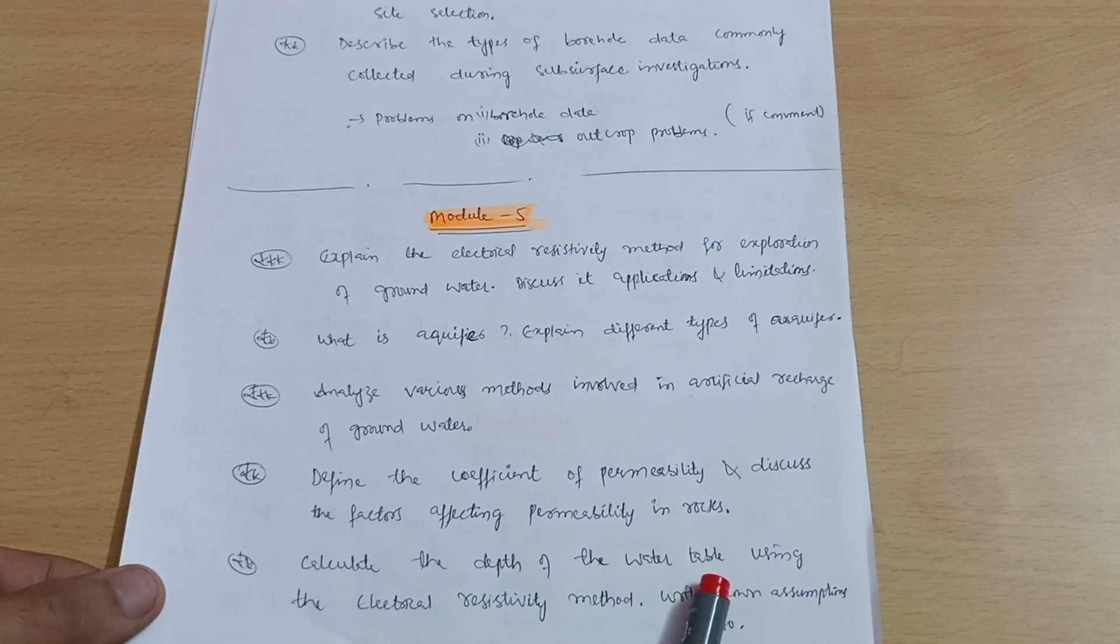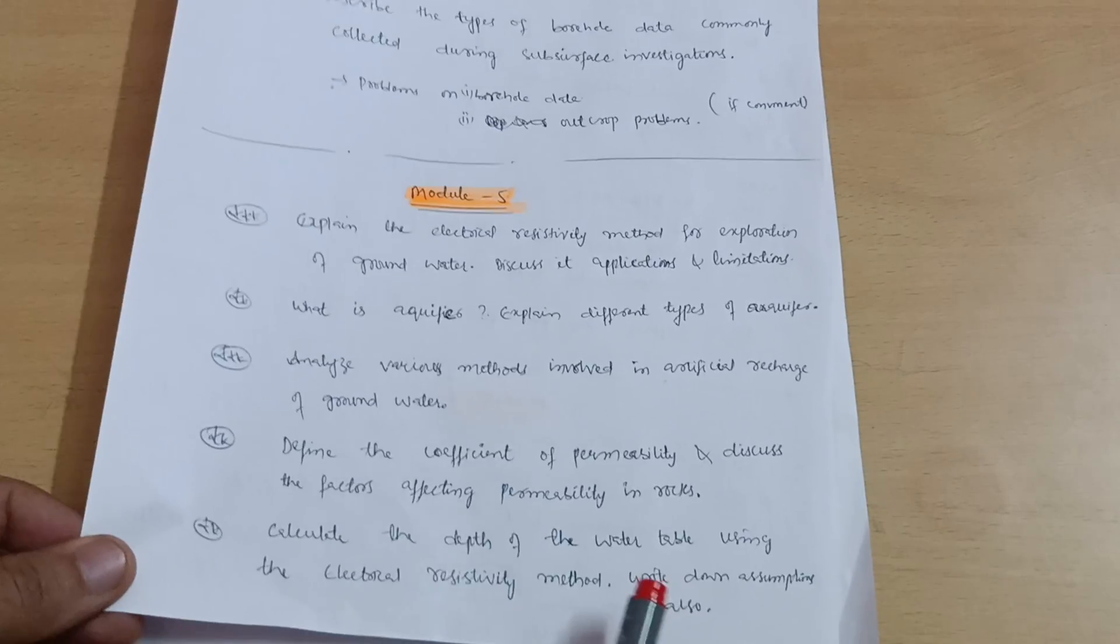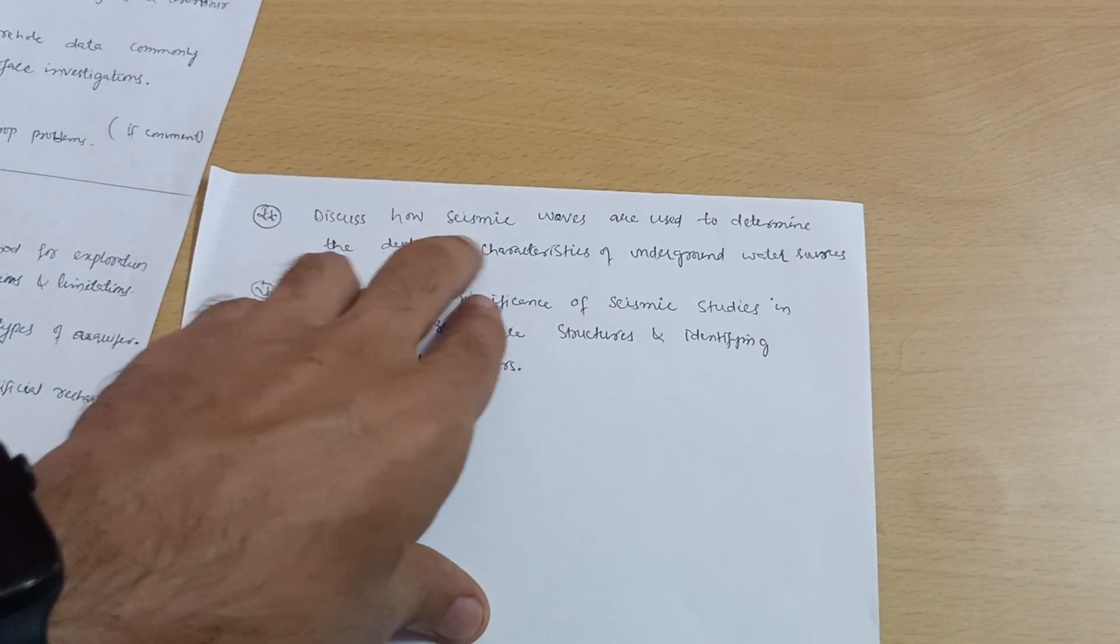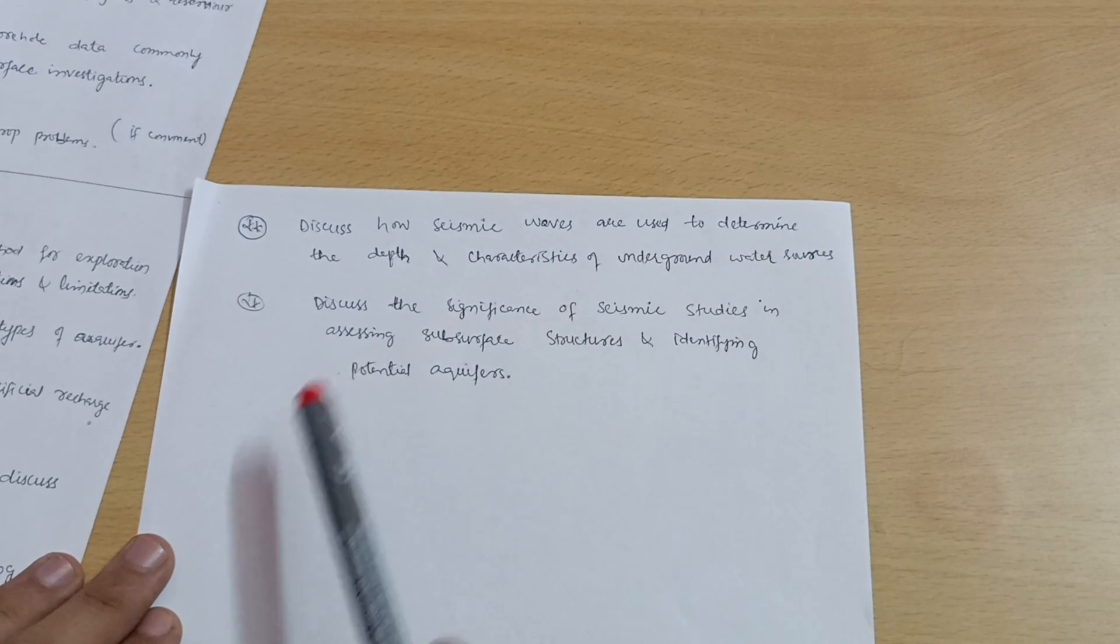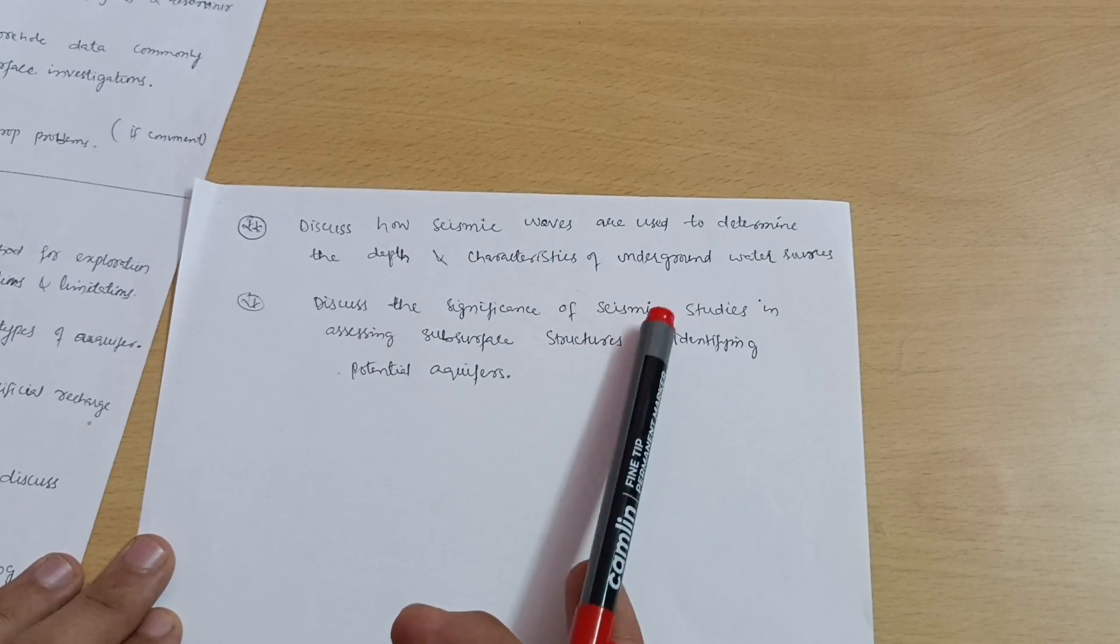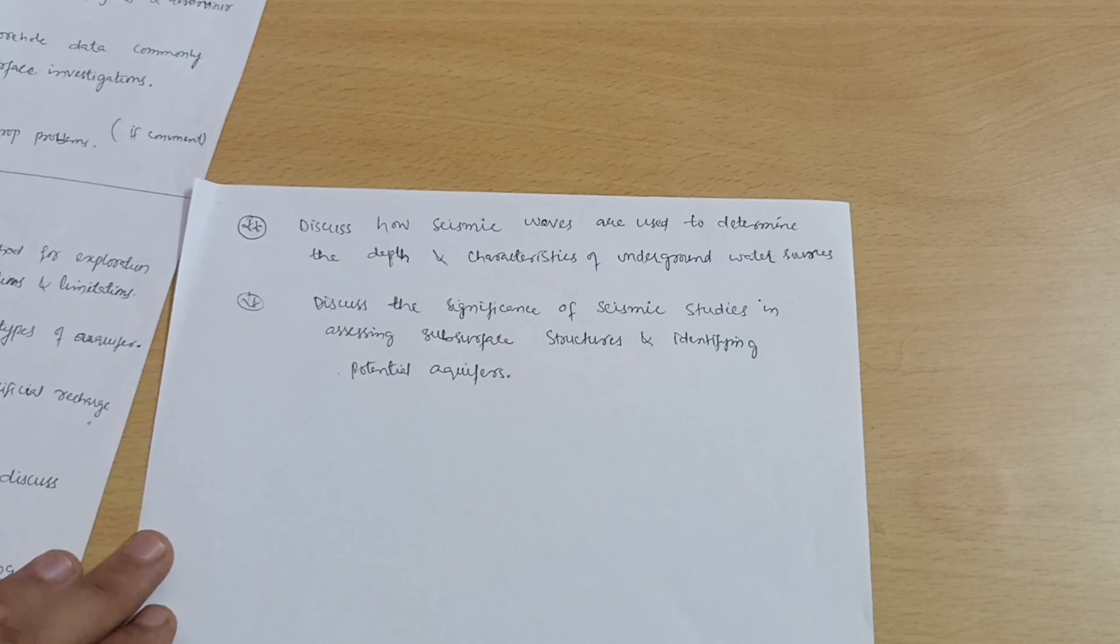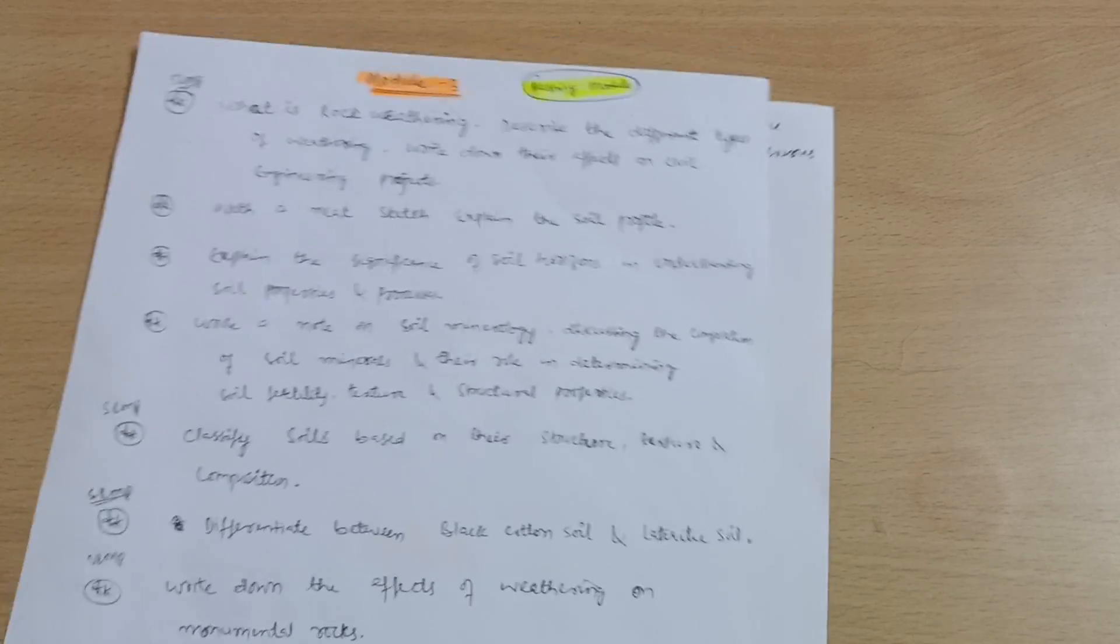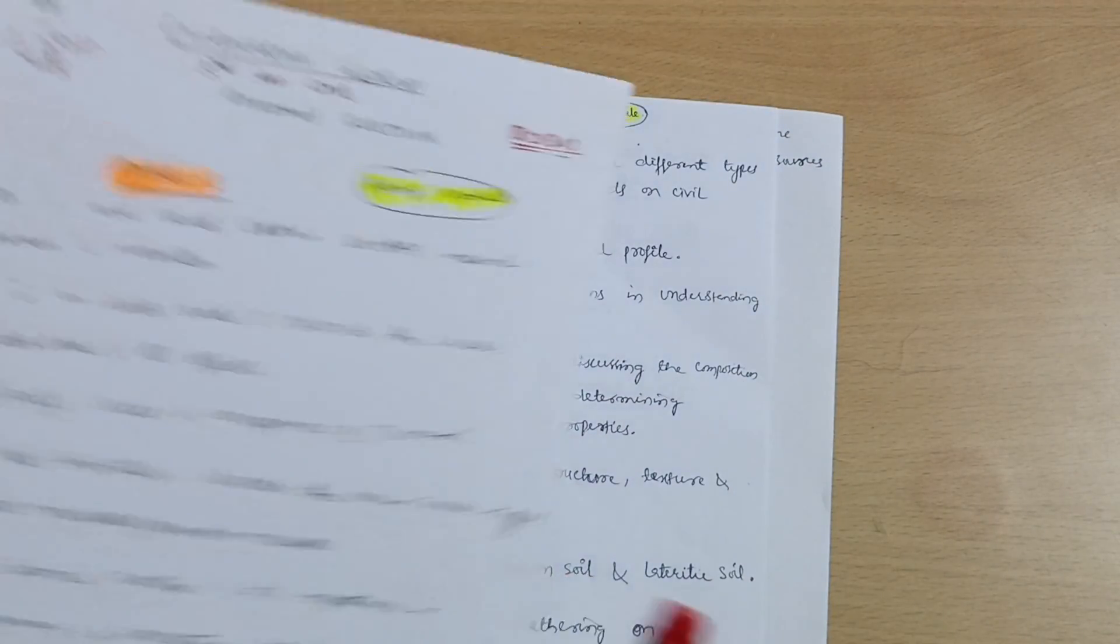Calculate the depth of water table using the electrical resistivity method. Write down assumptions also. This is the most important question. Next is discuss how seismic waves are used to determine the depth and characteristics of underground water sources. Discuss the significance of seismic studies in assessing subsurface structures and identifying potential aquifers.